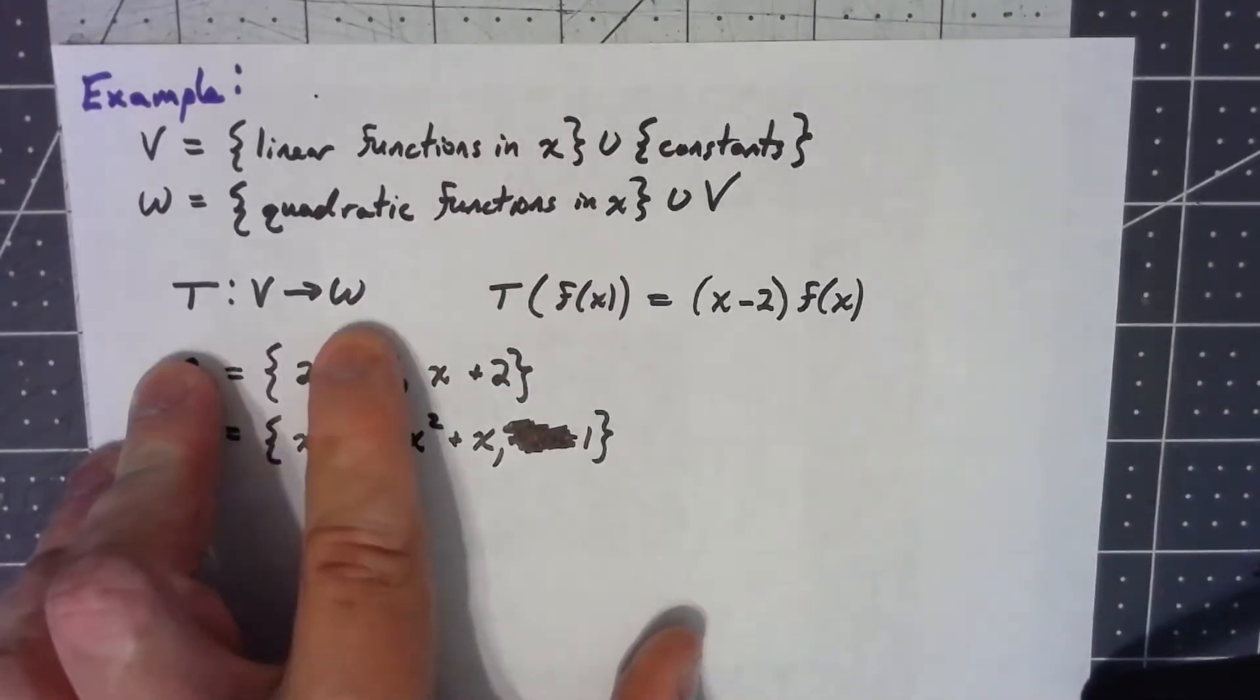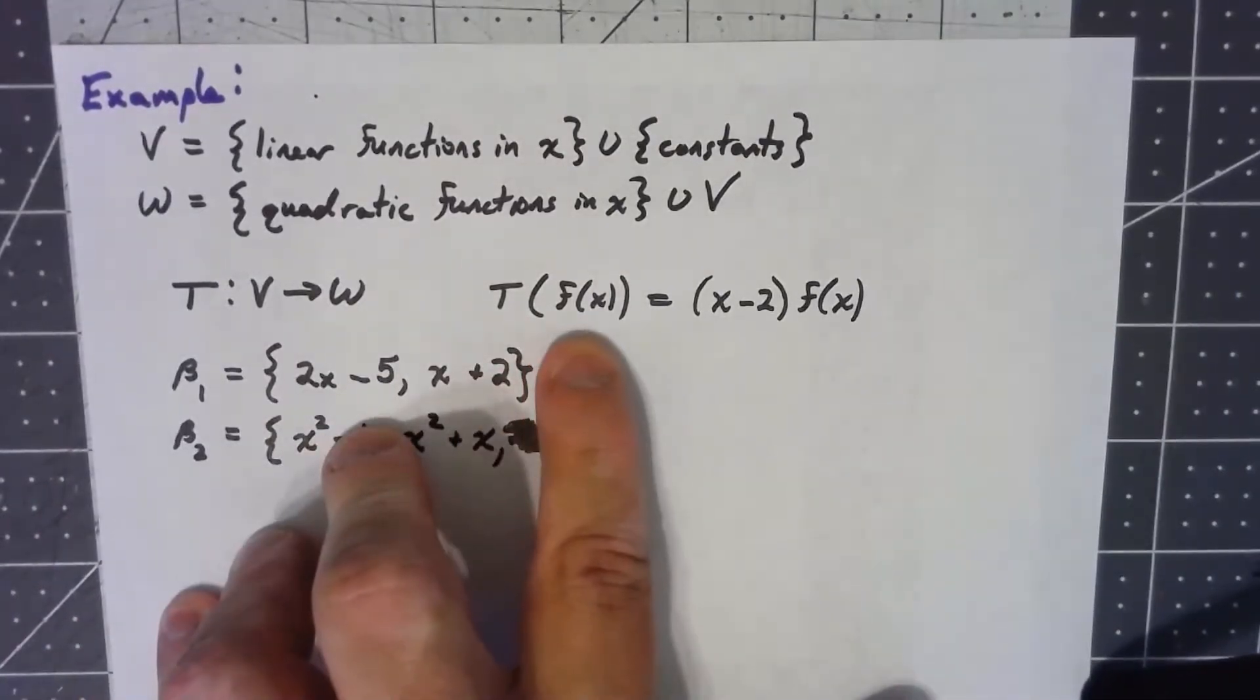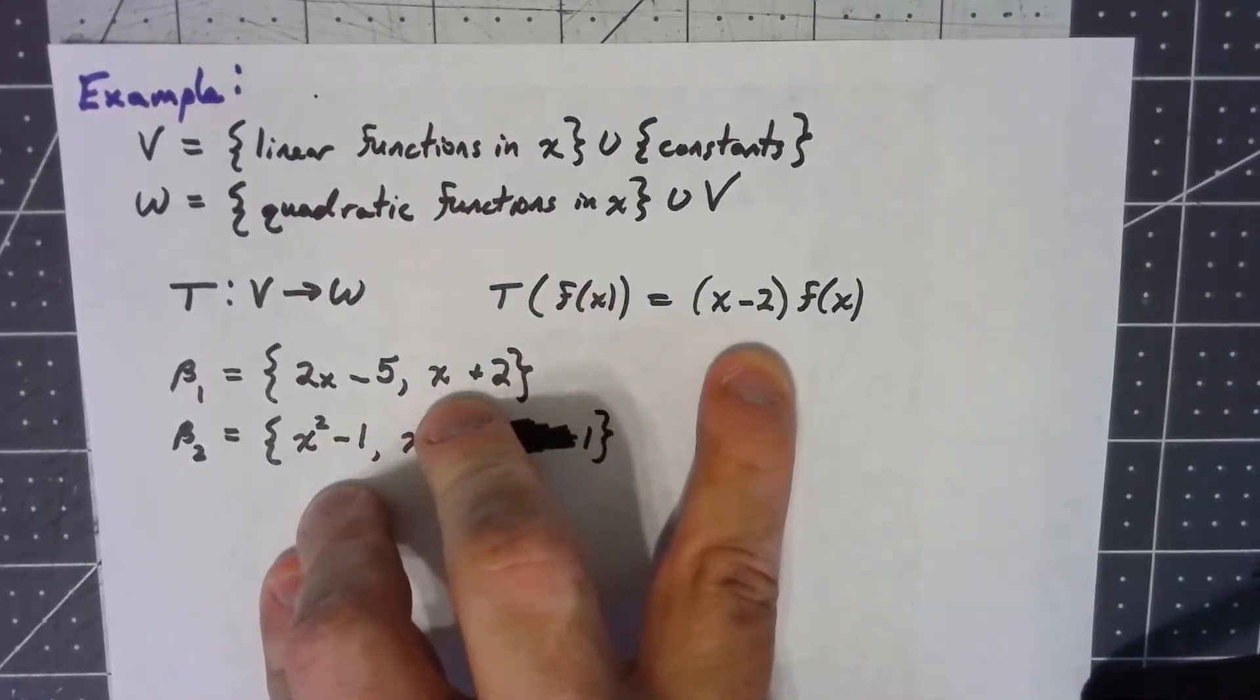A linear transformation from V to W is: we take the function f(x) and multiply it by x minus 2.